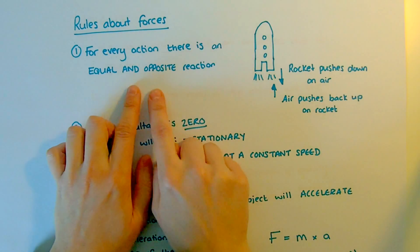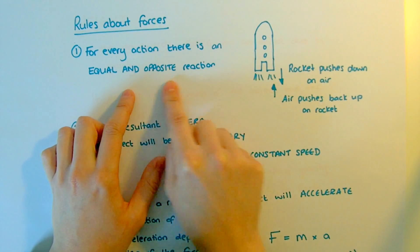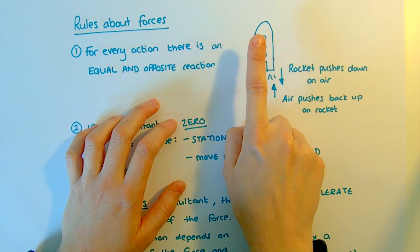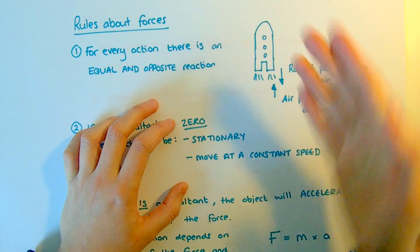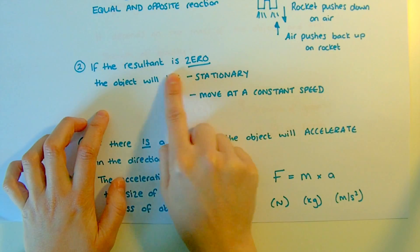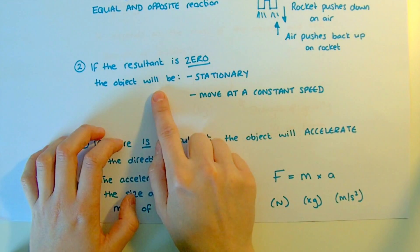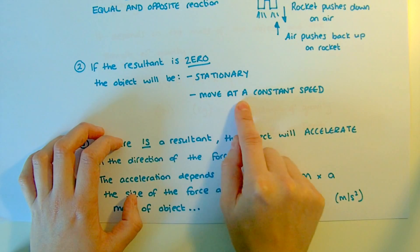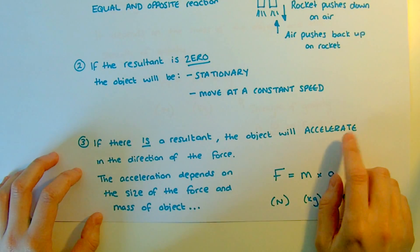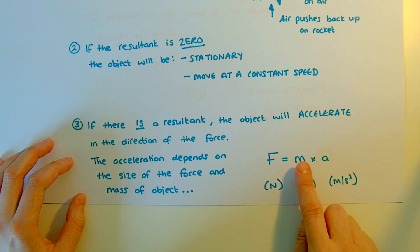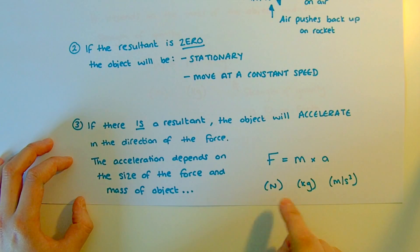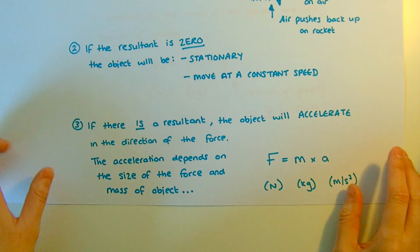A few rules about forces. First: for every action, there is an equal and opposite reaction. If one object pushes on another, the second one will push back with an equal amount. For example, the rocket pushes down on the air, so the air pushes up on the rocket — that's what makes the rocket go up. Regarding resultant forces: if there is no resultant force and forces are balanced, the object will either be stationary or moving at constant speed. If there is a resultant, that overall force will make the object accelerate in the direction of the resultant. The amount of acceleration depends on the size of the resultant force and the mass of the object. Units: forces in newtons, masses in kilograms, acceleration in metres per second squared.